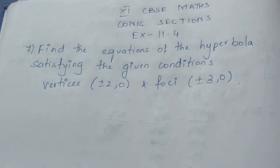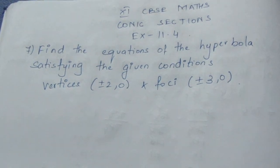Let's see the question. Find the equation of the hyperbola satisfying the given conditions: Vertices (±2,0) and Foci (±3,0).